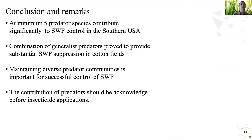In closing, there is at least a minimum of five predatory species that contribute significantly to whitefly control in the US, and a combination of these should prove to improve biological control. Therefore, maintaining diversity and knowing the predators out there should be an important step in successful control of whiteflies for the future. Authors in the Southwest are now promoting relative ratios of predators to whiteflies in making decisions for insecticides, and we'll be working on that in the future.